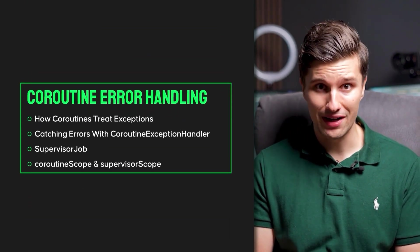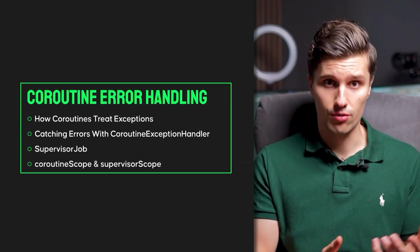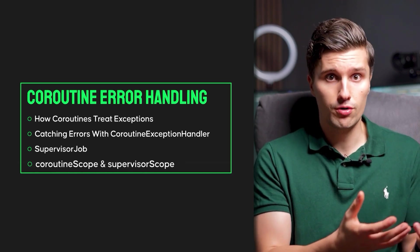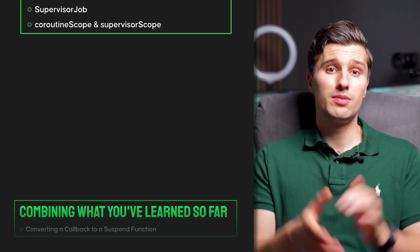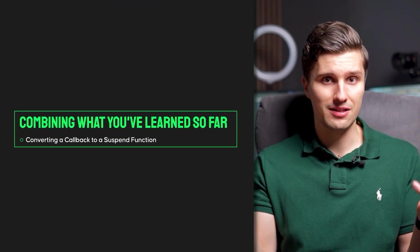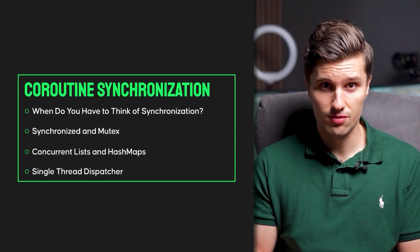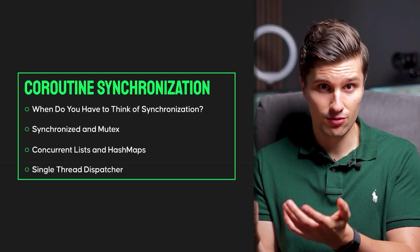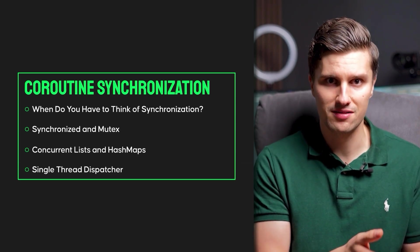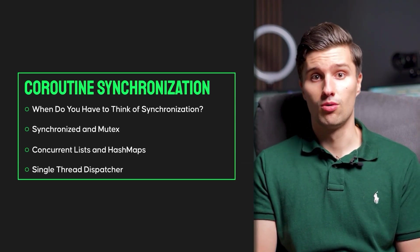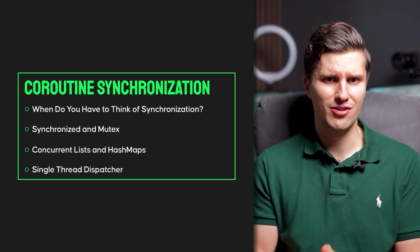Then there will be a section about coroutine error handling — how exceptions are propagated to parent coroutines, and how you can decide which coroutine scope to use so an error doesn't accidentally cancel coroutines it shouldn't. There's also a section on transforming callbacks into suspending functions, which teaches a lot about how coroutines work internally. Then synchronization: when it matters, how to prevent race conditions, and the different approaches — mutexes, the synchronized block, concurrent collections, and custom dispatchers — concepts I've never covered on YouTube before.